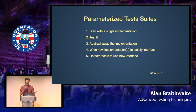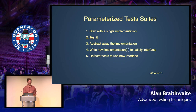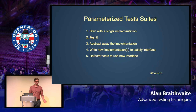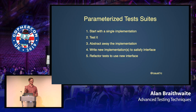Let's talk about parameterized test suites. The testing strategy I use is: I start with a single implementation and test it. Eventually I find a need to abstract away that implementation, then write new implementations to satisfy that interface — sometimes stubs, sometimes another implementation. Then I refactor my tests to use that new interface, and that last step is the important one.